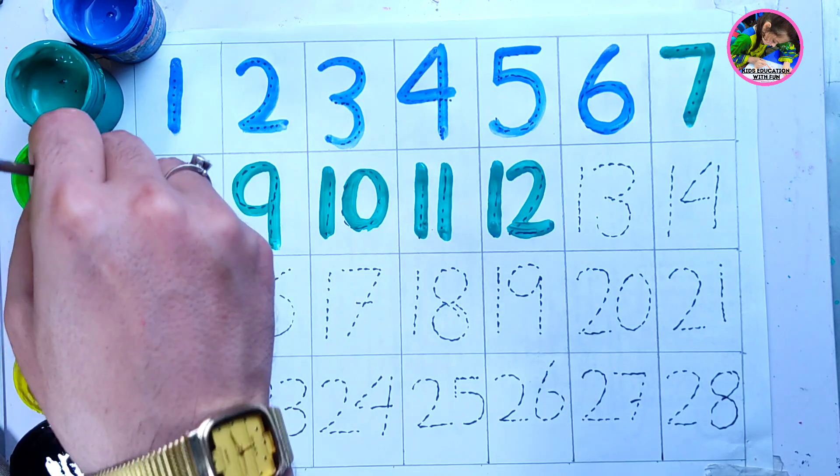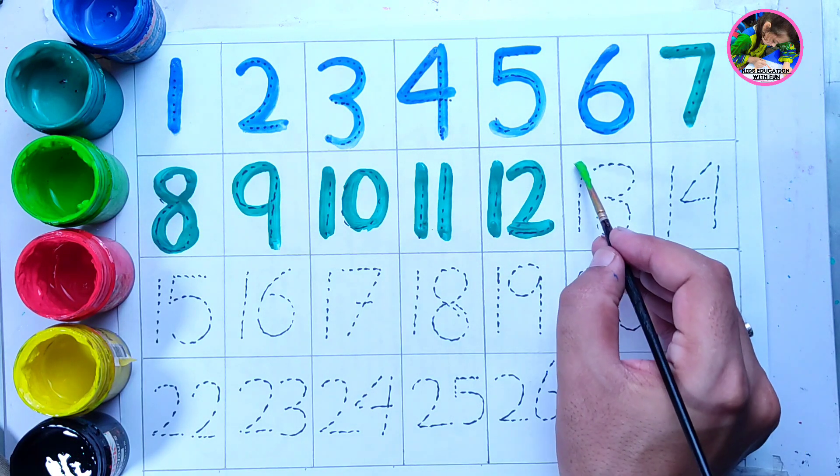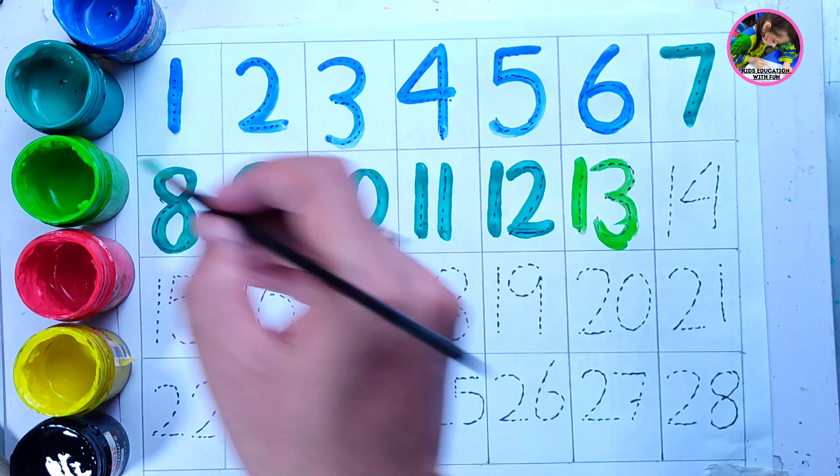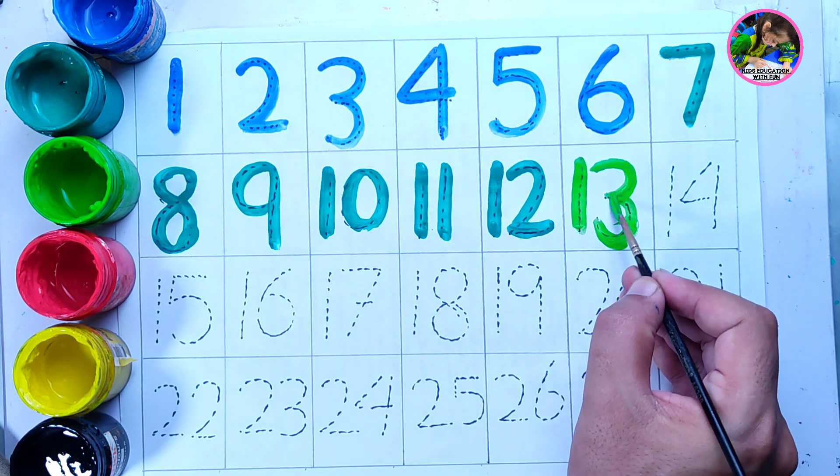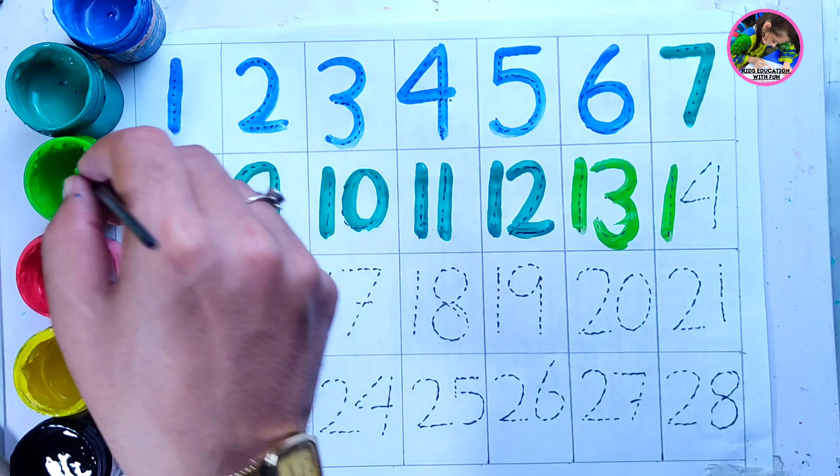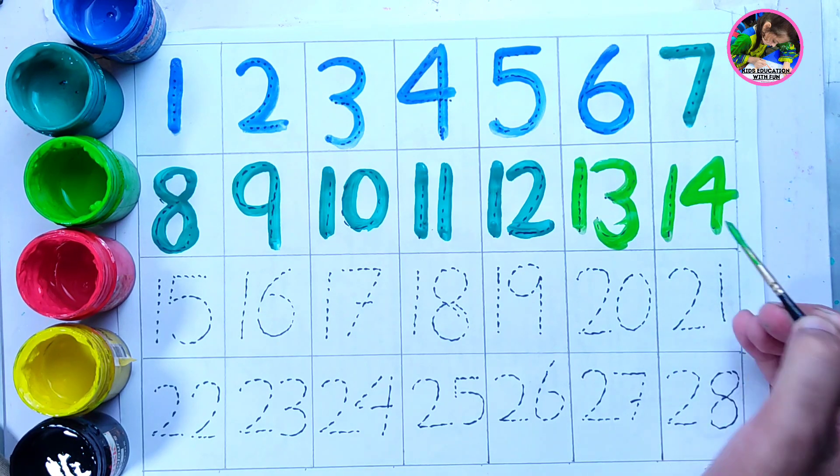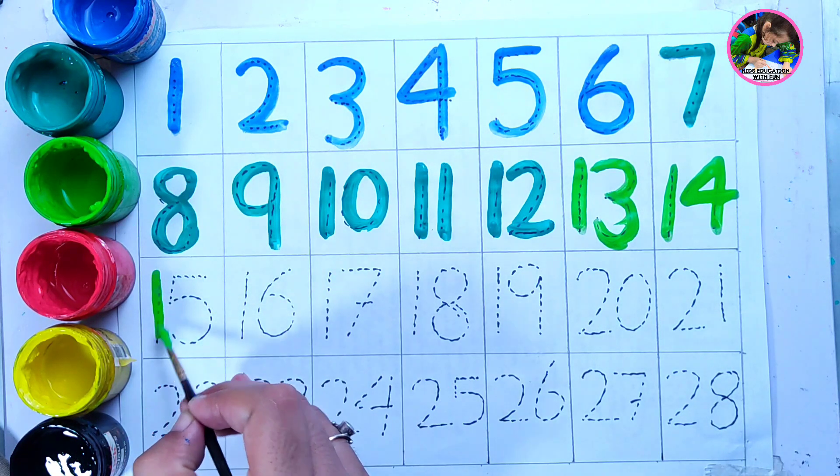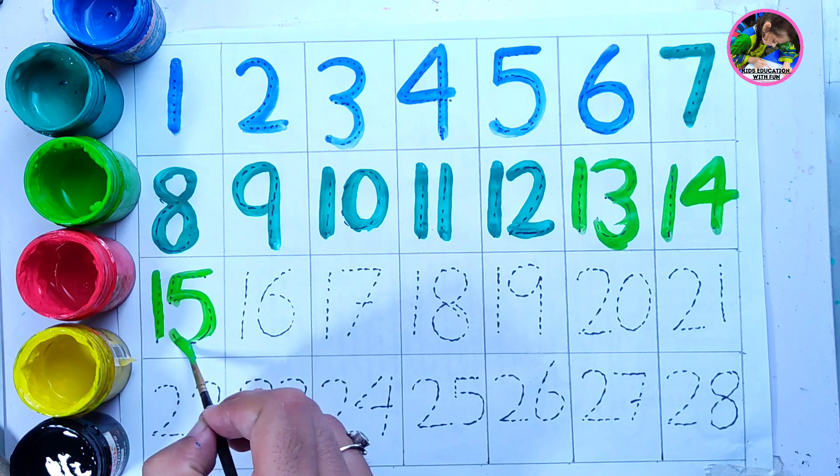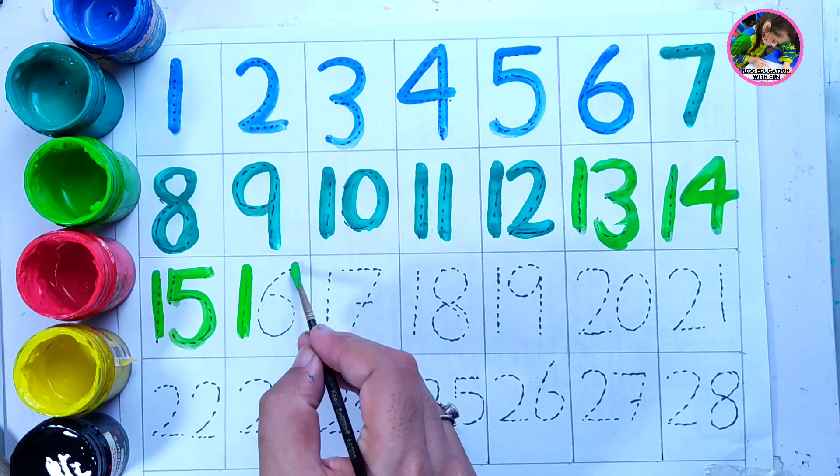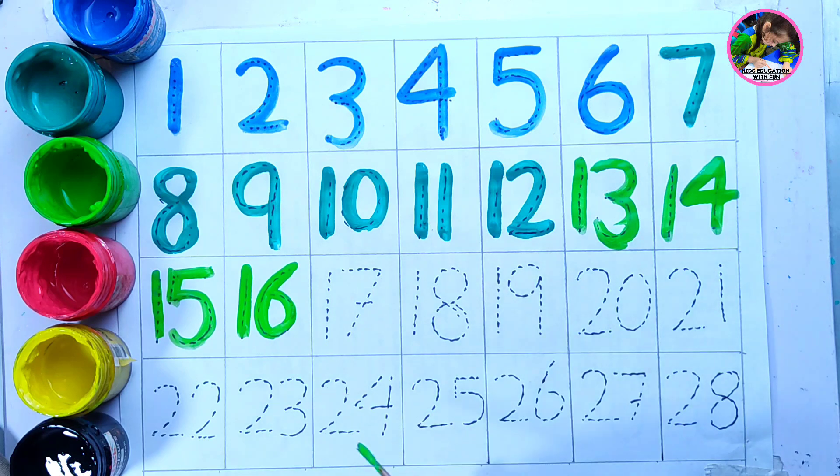Now we have light green color. 13, this is light green color, number 13. 14, number 14, number 15, this is 15, and 16. So we used light green color to write number 13 to 16.